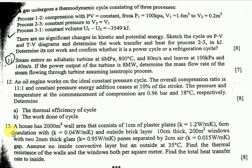Question number thirteen from Chapter 7, introduction to heat transfer: given a table with area and data, find the thermal resistance of the wall and window elements per square meter, find the total heat transfer rate to the inside, and the heat transfer rate through the wall using the given data.